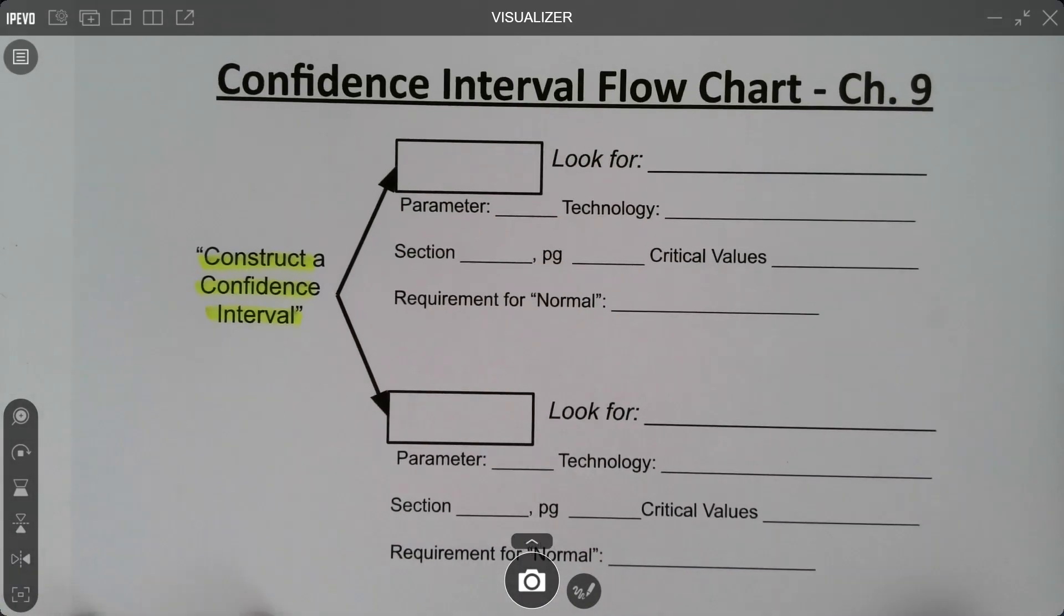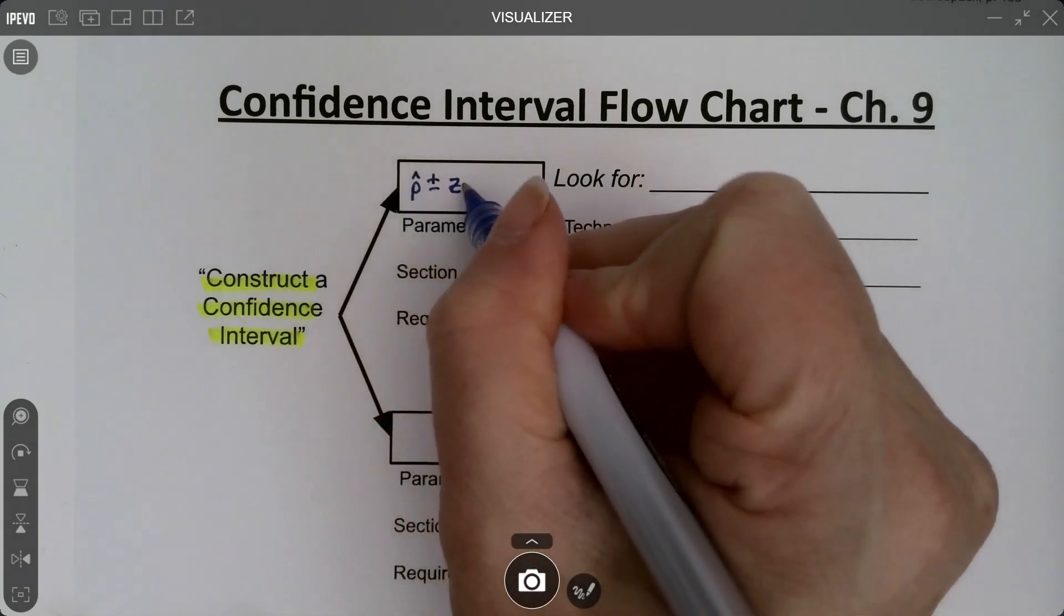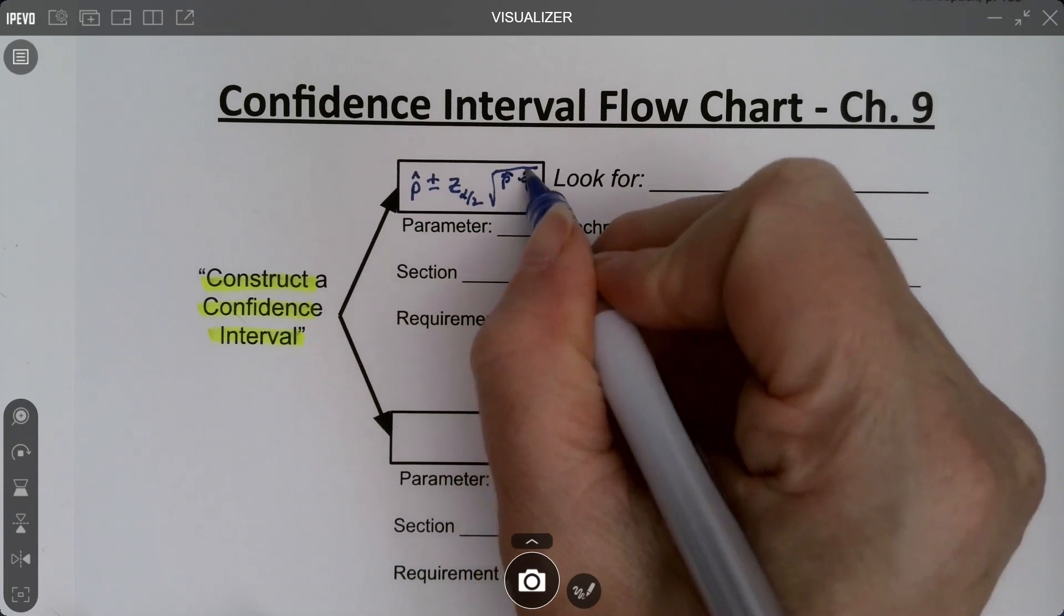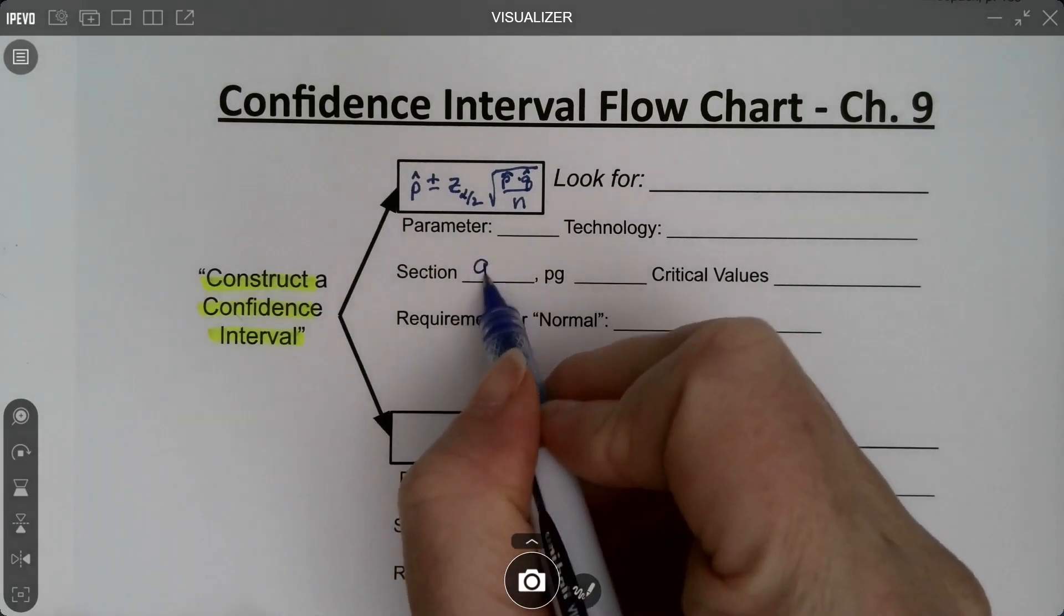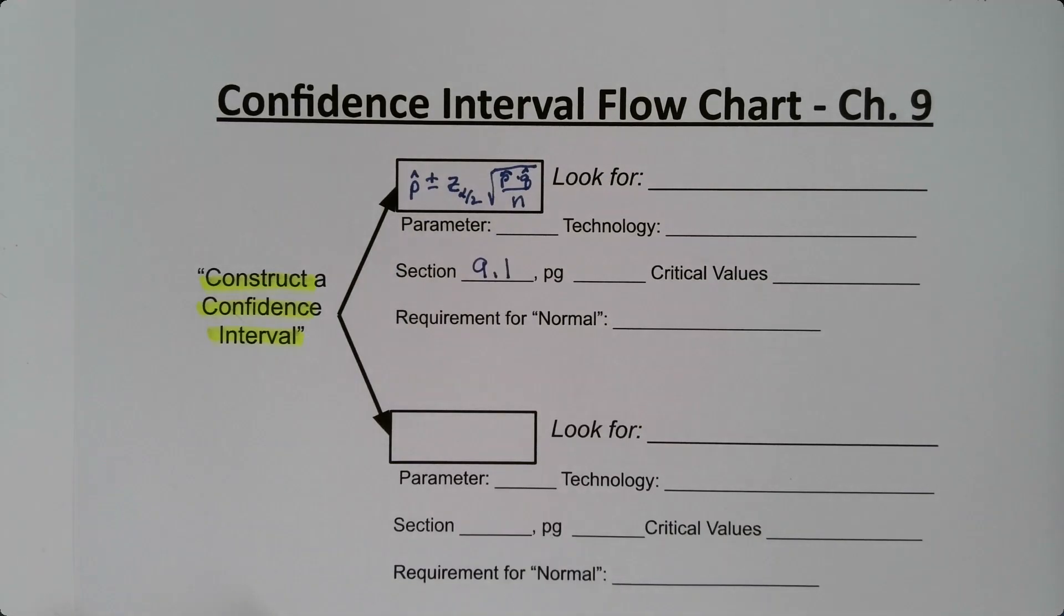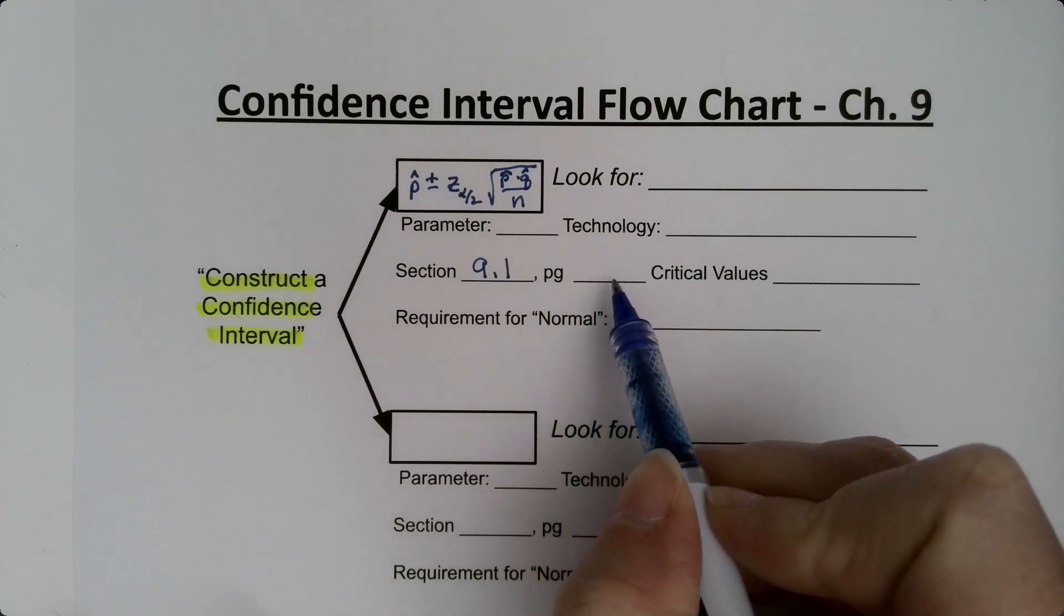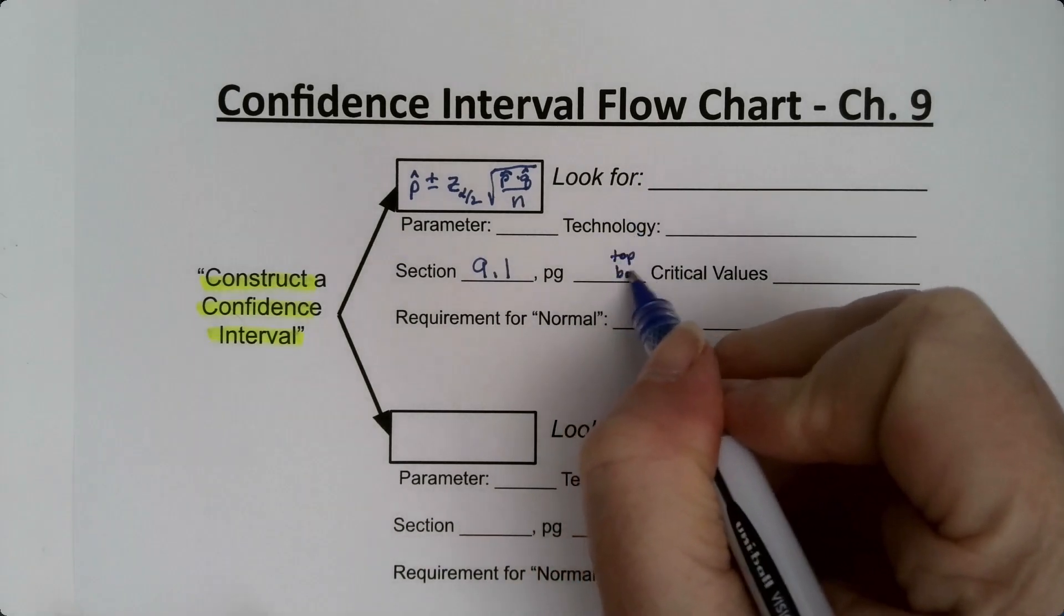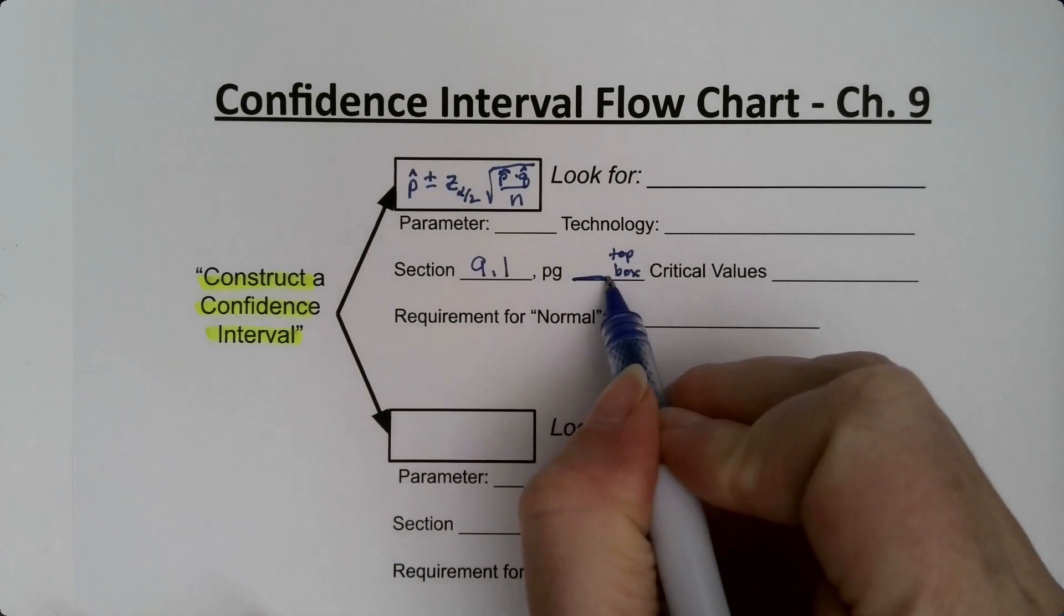So if we're going to go with, now let's do the proportion one first. So that was p hat plus or minus z alpha over two times the square root of p hat times q hat over n. Alright, so now that was from section 9.1. Now where to find it will depend on what semester you're watching this in, right? So I'm going to leave the page blank, but you fill it in with the page from your particular yellow packet, your particular exam notes packet.